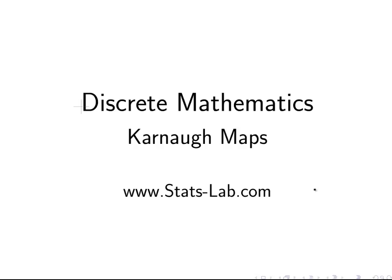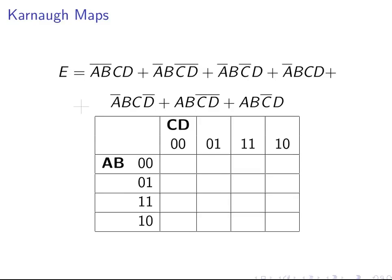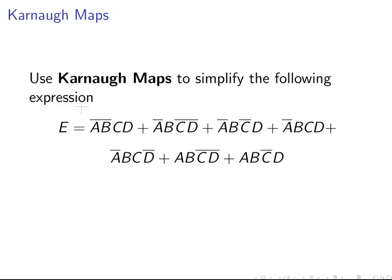In this presentation we are going to look at Karnaugh maps to simplify an expression. We have the expression E, which is made up of seven terms, and essentially what we want to do is come up with a much shorter way of expressing E. So what we are going to do is use the Karnaugh map.